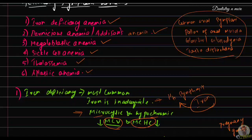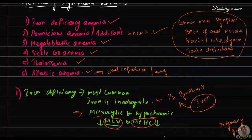Regarding aplastic anemia, it may increase susceptibility to oral infections, which may require antibiotic prophylaxis or mouthwash. There are also chances of spontaneous or uncontrolled gingival bleeding, which must be managed with anti-fibrinolytic medications, and there should be avoidance of intramuscular injections and nerve block anesthesia. Dentists must be very careful with aplastic anemia patients due to risks of infection and bleeding.